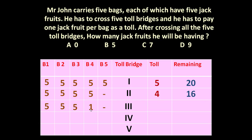He distributes the 16 jackfruits: 5, 5, 5, and 1 — with the 5th bag vacant and empty. So at the 3rd toll bridge he pays 1, 2, 3, and 4 — that is 4 jackfruits as toll tax. Leftover jackfruits are 12.